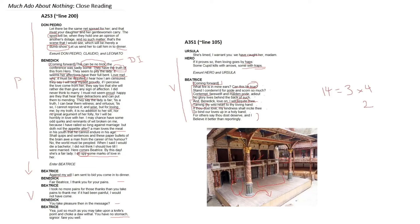Moving briefly onto Beatrice — when she says 'what fire is in my ears,' there are a couple of different ways of interpreting the word 'fire' here. Obviously she's blushing, so that's why she feels warm in the ears. On the other hand, fire can be interpreted as a spark of sorts, where there's been this piece of gossip, this piece of hearsay that has been dangled in front of her and she's taking the bait. And now this spark will grow into a fire — it will grow into something stronger than what it began as.